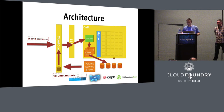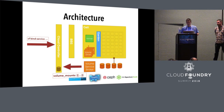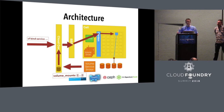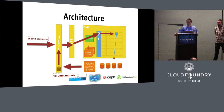Cloud Foundry then takes those mount instructions and does a couple of things. First, BBS talks to Volume Manager, and Volume Manager talks to the volume-specific driver on the cell to perform the actual mount onto the cell itself. Then secondly, BBS instructs Garden to take that volume mount done at cell level and mount it into the container that's going to host the app you're pushing. And that's pretty much it. It's a fairly simple picture, but we think it caters for all of the current and future use cases.